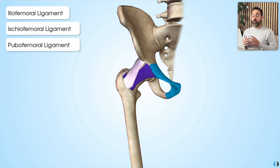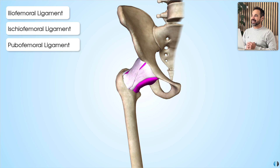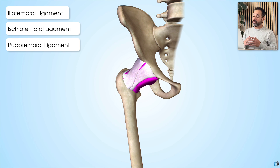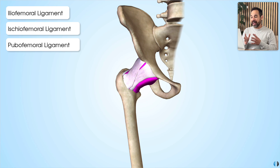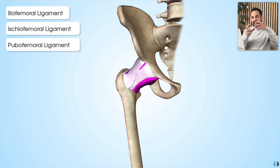All three of these ligaments are considered to be bound to the hip joint capsule, making the whole area really safe and secure. We should consider these ligaments as extensions of the capsule rather than totally separate structures. The ligaments bound to the capsule means that there's a real connection between the acetabulum and the femur.